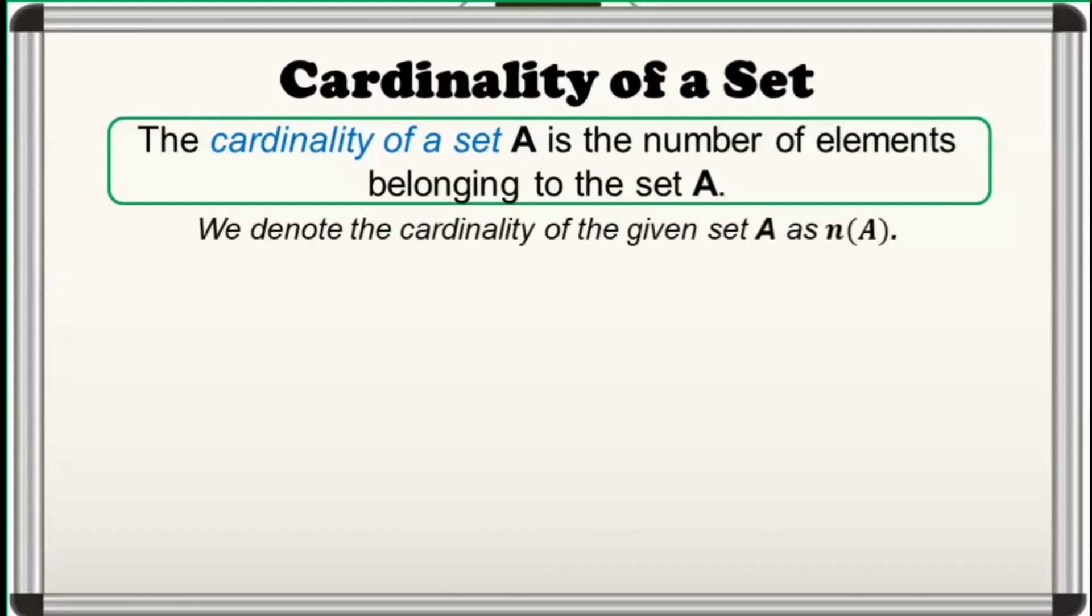We denote the cardinality of the given set A as N, open parenthesis, A, closed parenthesis. It is read as cardinality of A, or simply N of A.